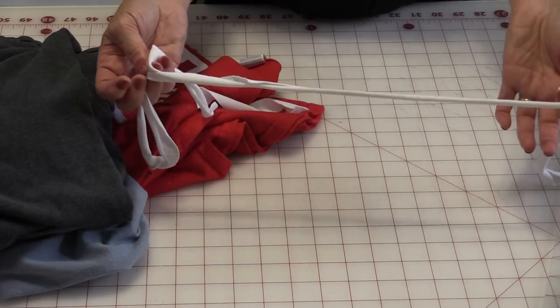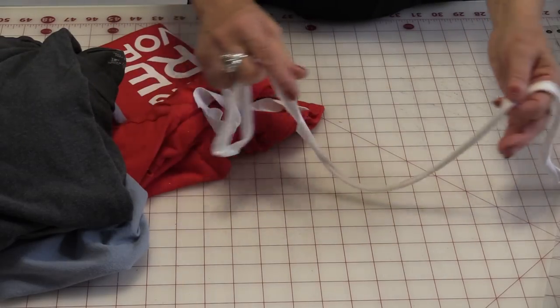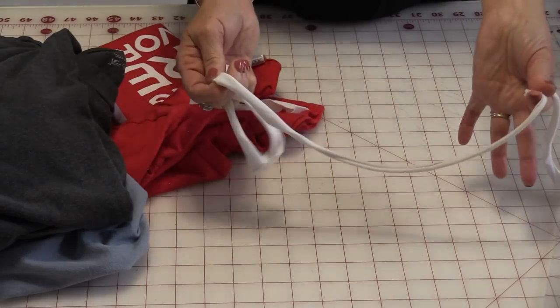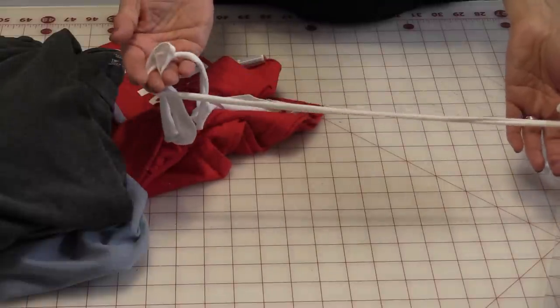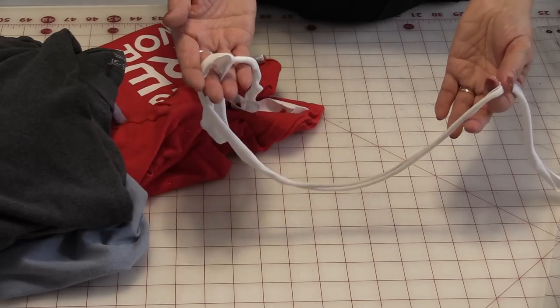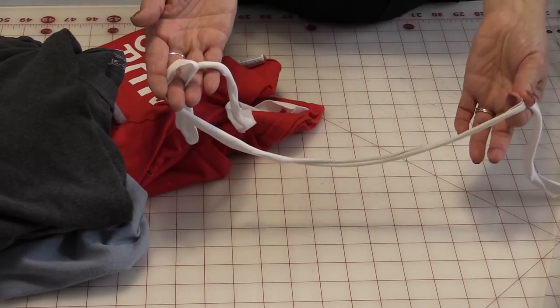So what I'm going to do with it is make t-shirt yarn. It's just t-shirt fabric cut into long strips, and when it's stretched it does this little curl and you're able to knit and crochet with this. Let me show you how easy it is to turn a t-shirt into yarn.